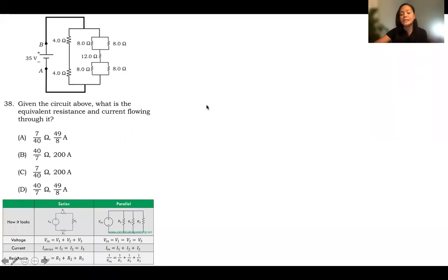Hello. This is number 38 on the NMAT sample exam. We will compute for the total resistance, the equivalent of the total resistance, and the total current or the current flowing through the circuit. For the total resistance, we follow these rules, these formulas. Let's compute.